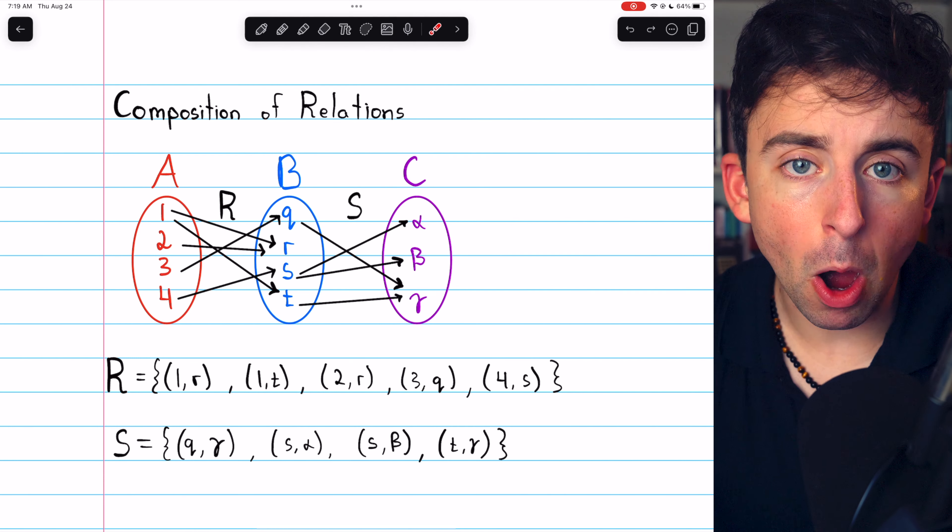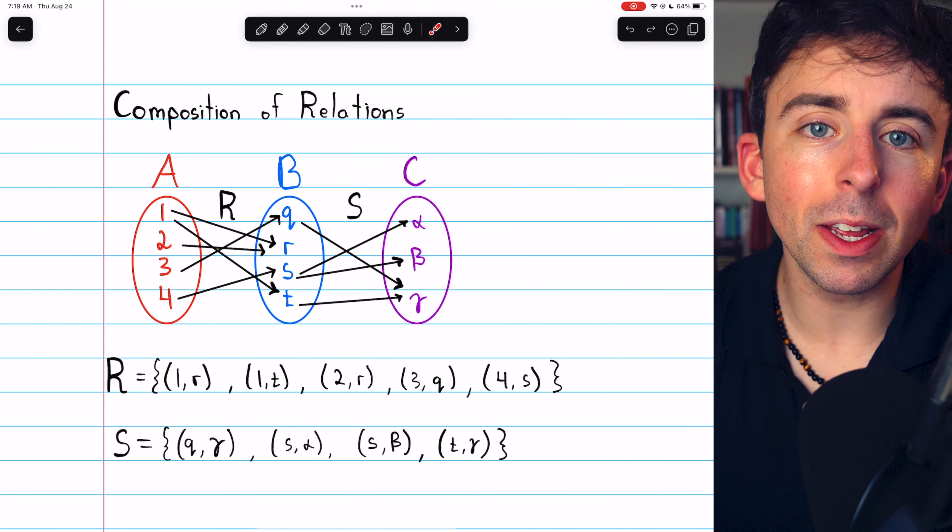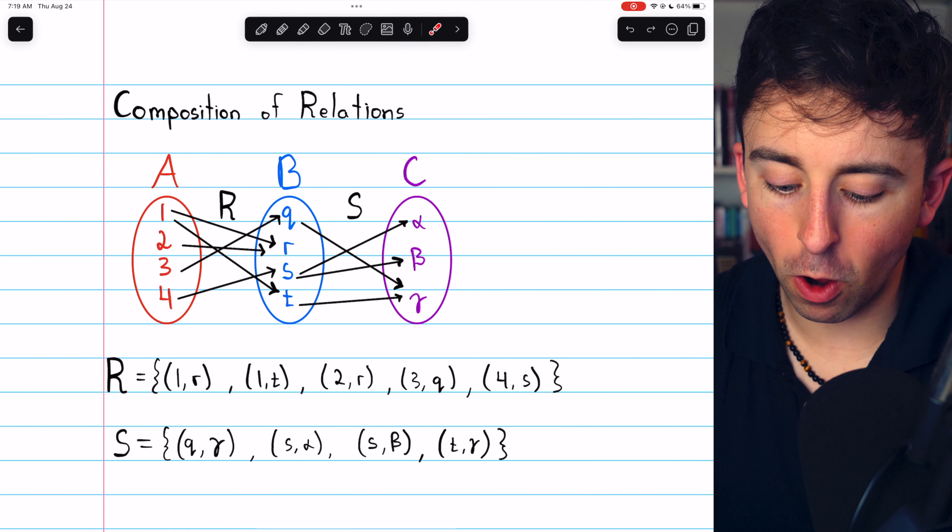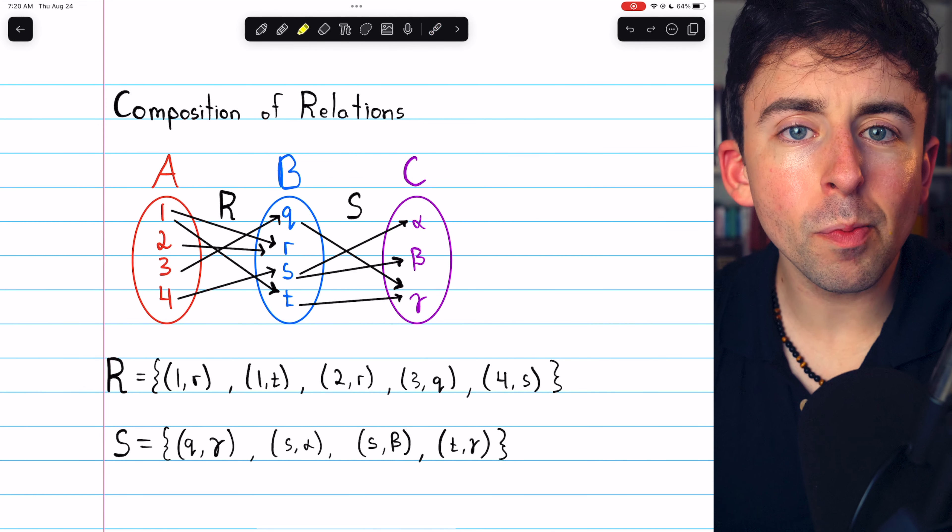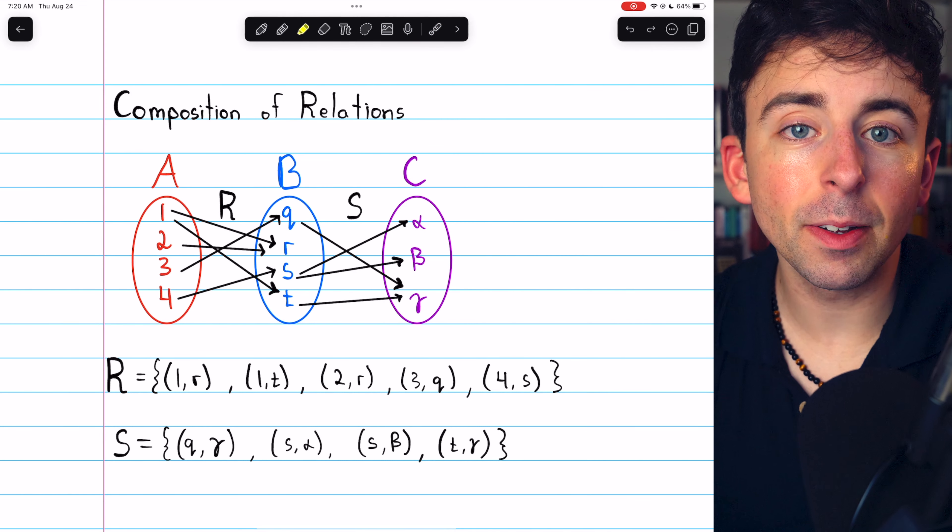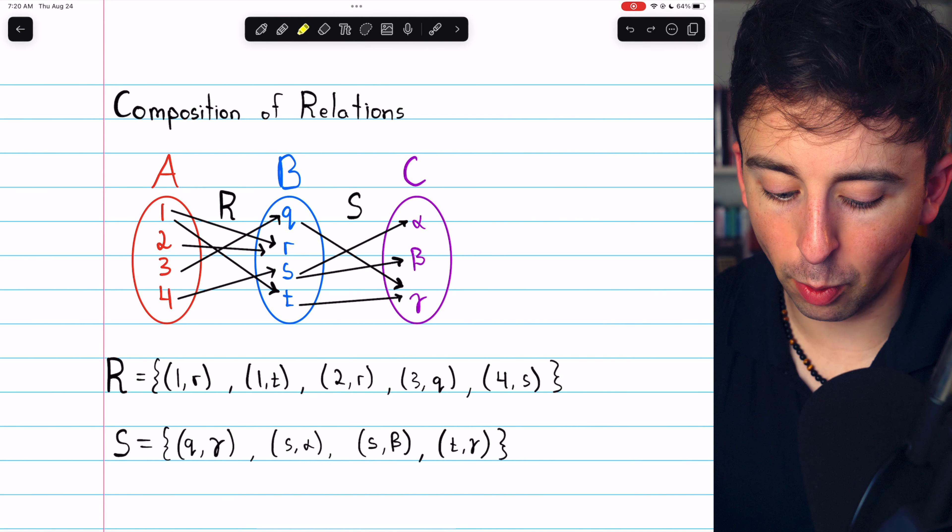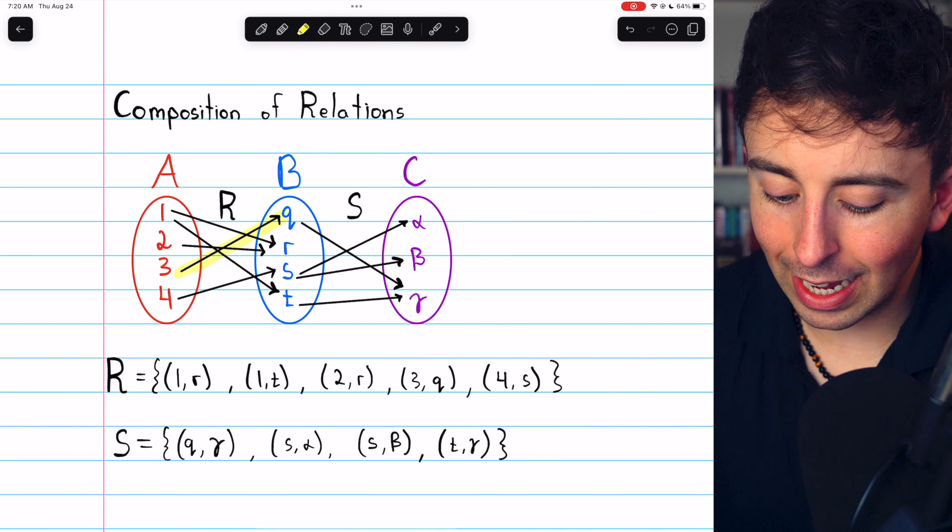What would happen if we compose these relations? What would it mean to compose the relation R with the relation S? It works out probably just how you expect. Under the composite relation, for example,